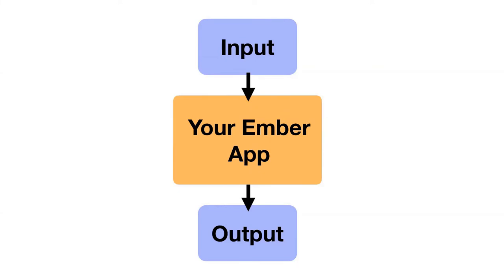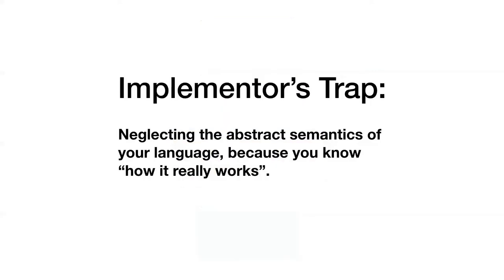It's much nicer if we could think about our program in abstract terms. We want to be able to think in the language we're working in — think in Ember and not have to worry about how it's implemented — keeping a separation between the implementation and the interface. Conceptually, an Ember app absolutely has an output. If it has a clear meaning, we should know what the right output would be, independent of how you get there. I'm going to call this the implementer's trap — the people who know the most about how it really works are the ones most in danger of falling into it.